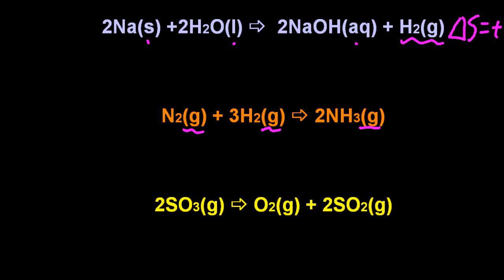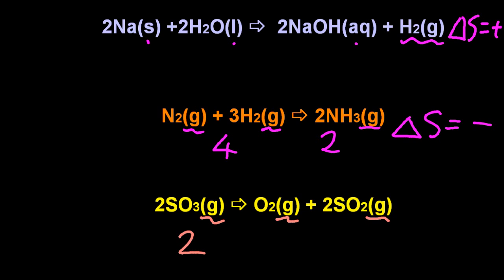The problem with the second one is the gas is everywhere. But there are four reactants and two products, so entropy is going down — four to two gases means less disorder. And for the third one, again gas is everywhere, but two are turning to three. So delta S is plus — disorder has increased.